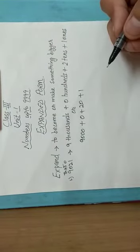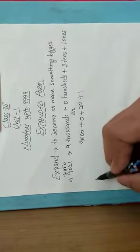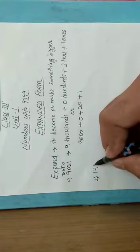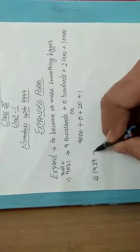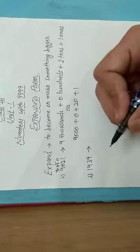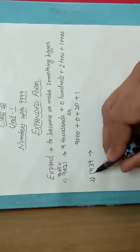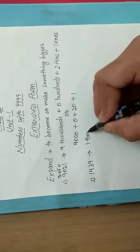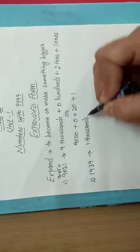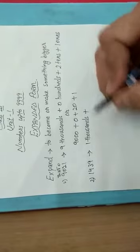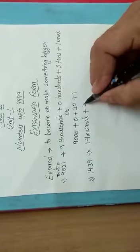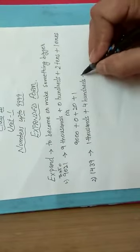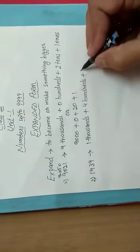So this form of writing a number is called expanded form. Let us take one more example: 1439. Starting from the thousands place, our first digit is 1. It is at the thousands place, so we will write 1 thousands. Then 4 is at the hundreds place, so we will write 4 hundreds.